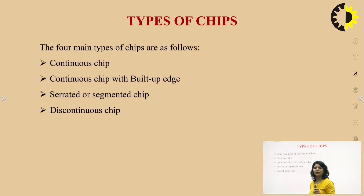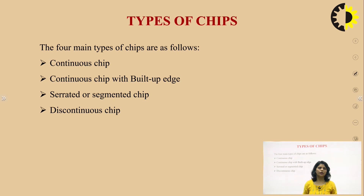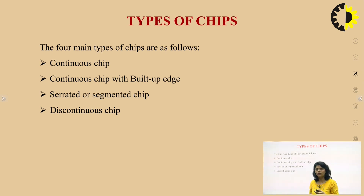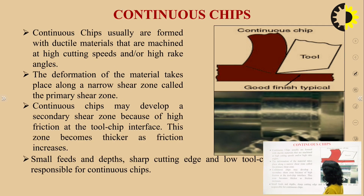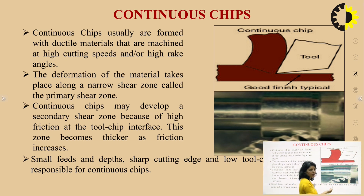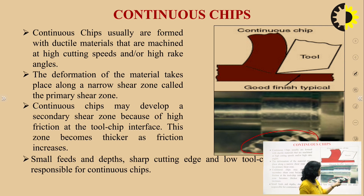We will now discuss the different types of chips. There are four types of chip: first is the continuous chip, then the continuous chip with built-up edge, then the segmented chip, and the last one is the discontinuous chip. We will now discuss the continuous chip.